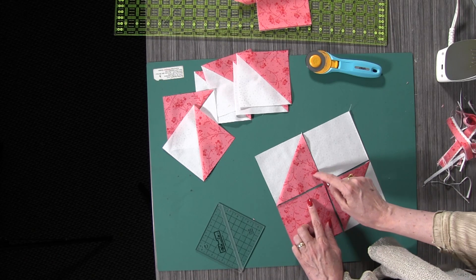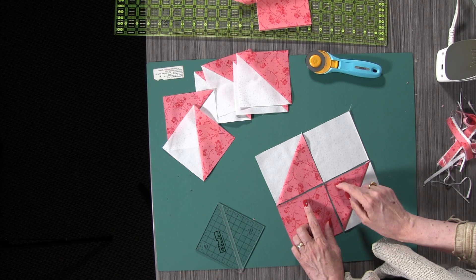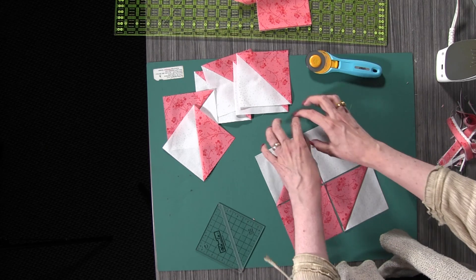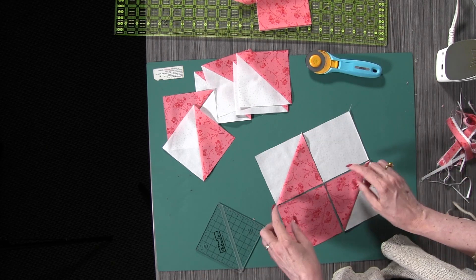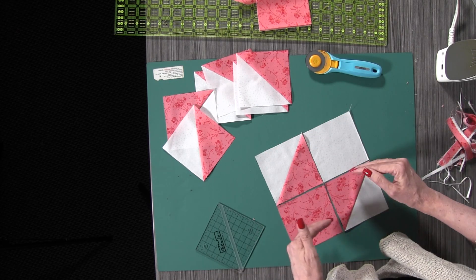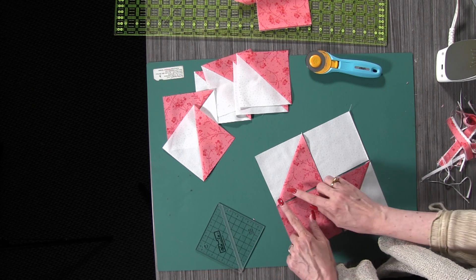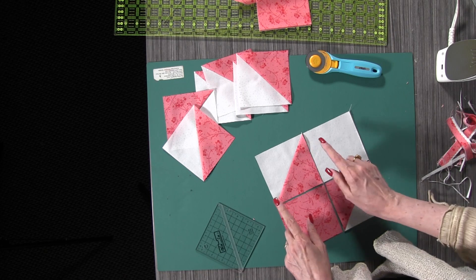What that does is it sends all of the seams in the same direction, so now when I take this four patch and I put it next to another four patch and another four patch and another four patch, all of those seams are going to be alternating and will nest together perfectly. That's really important when you have this kind of bulk in the half square triangles.